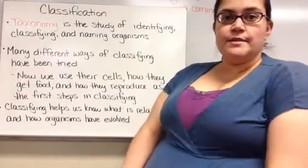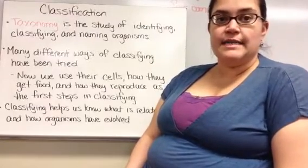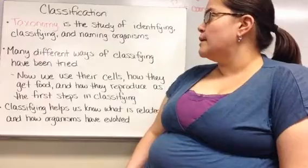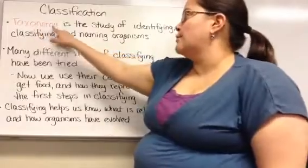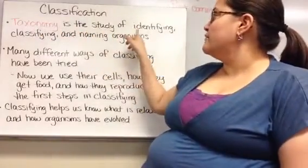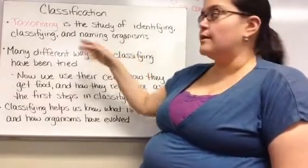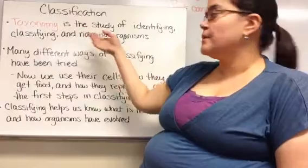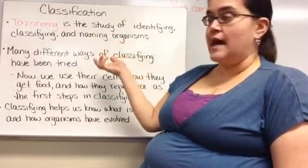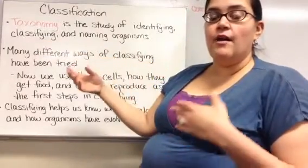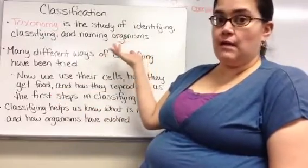This video is about the classification of organisms, or how we divide organisms into different groups. The first word to know is taxonomy, which is the study of identifying, classifying, and naming organisms. Scientists called taxonomists identify new organisms — there are new ones being found all the time — classify them, figure out what group to put them in, and then name them.